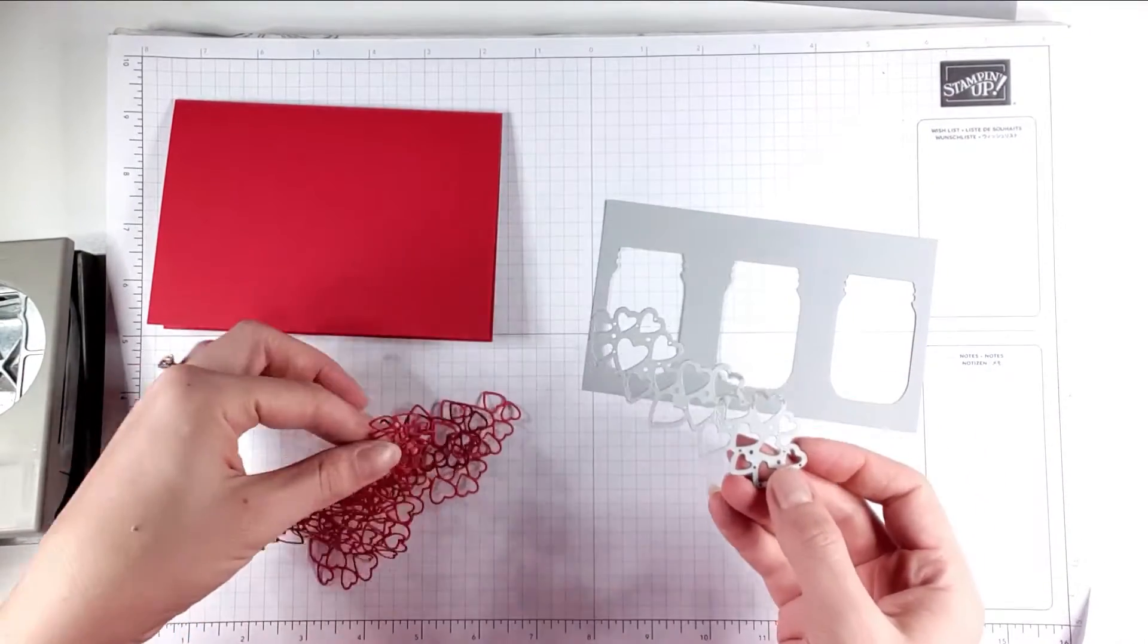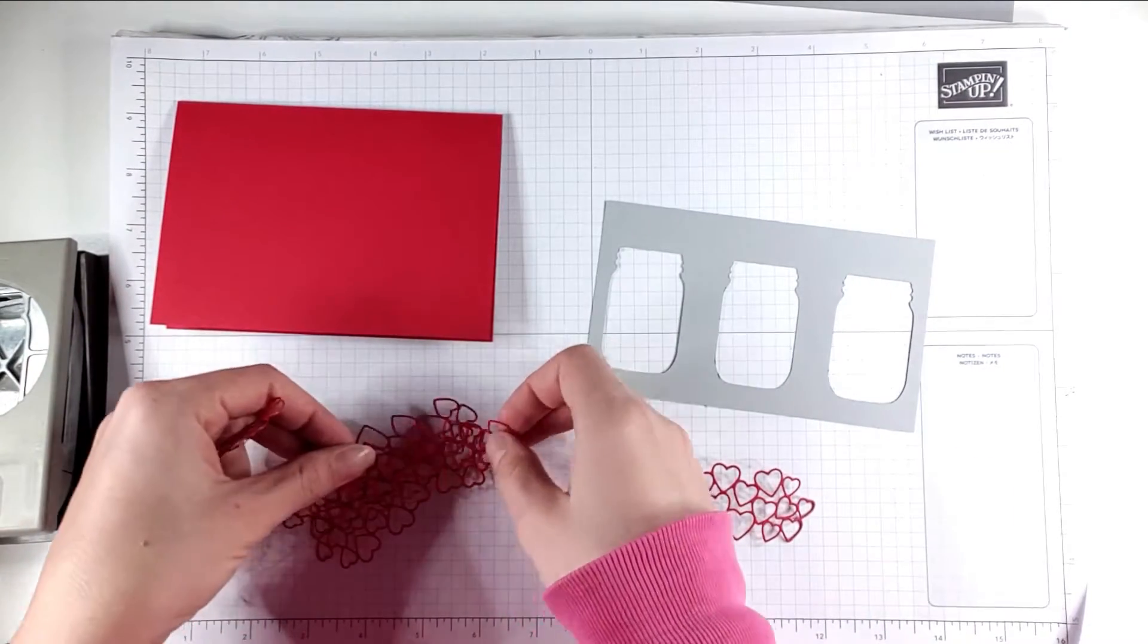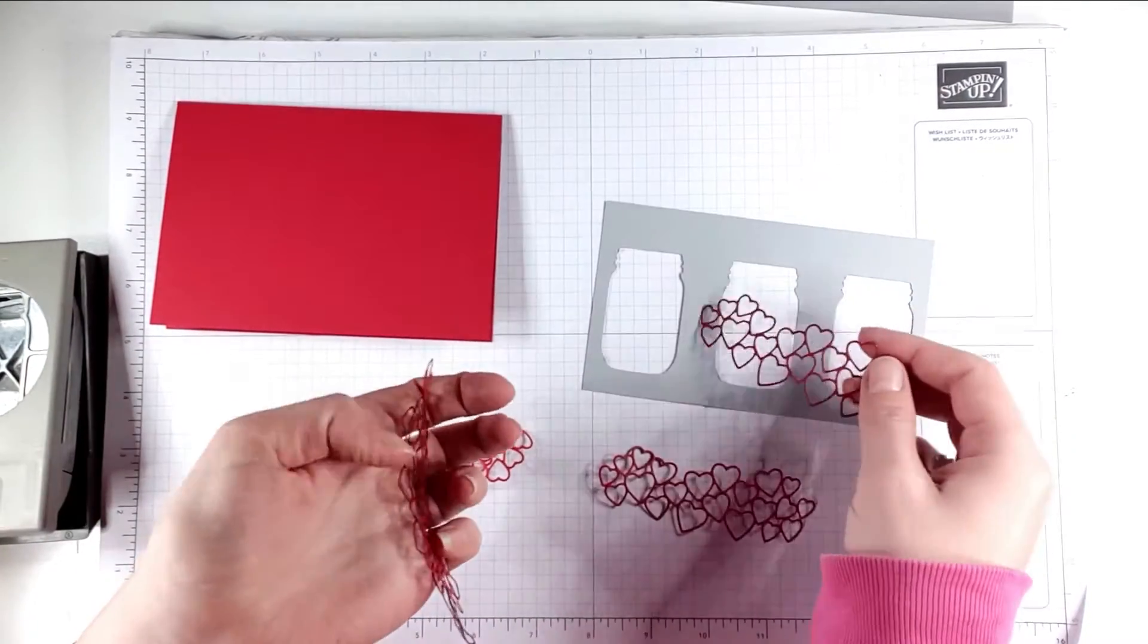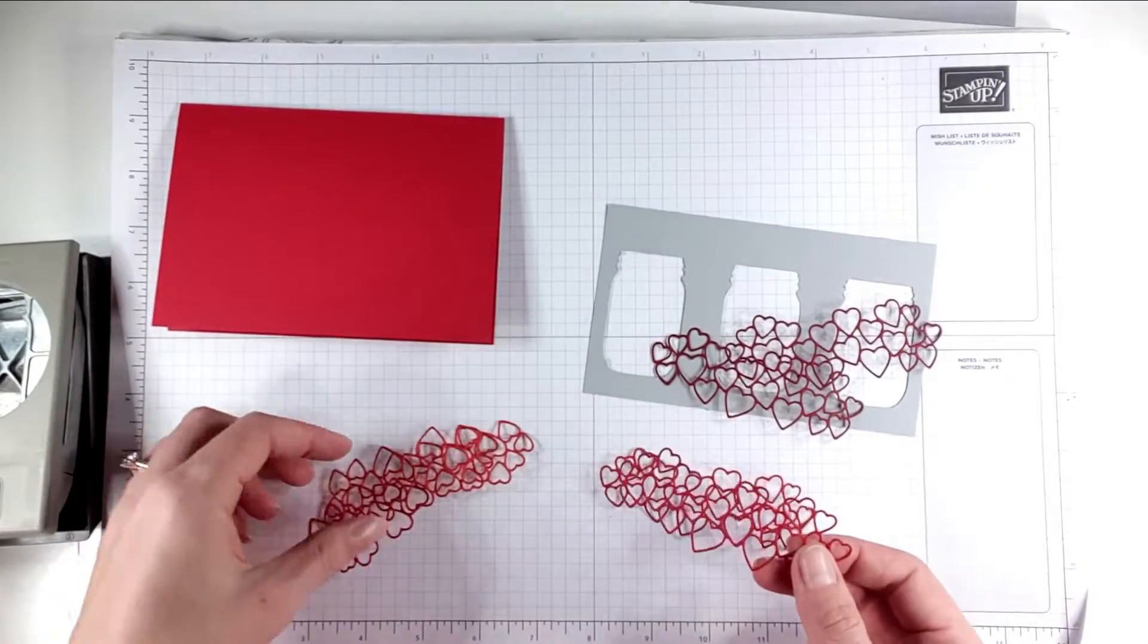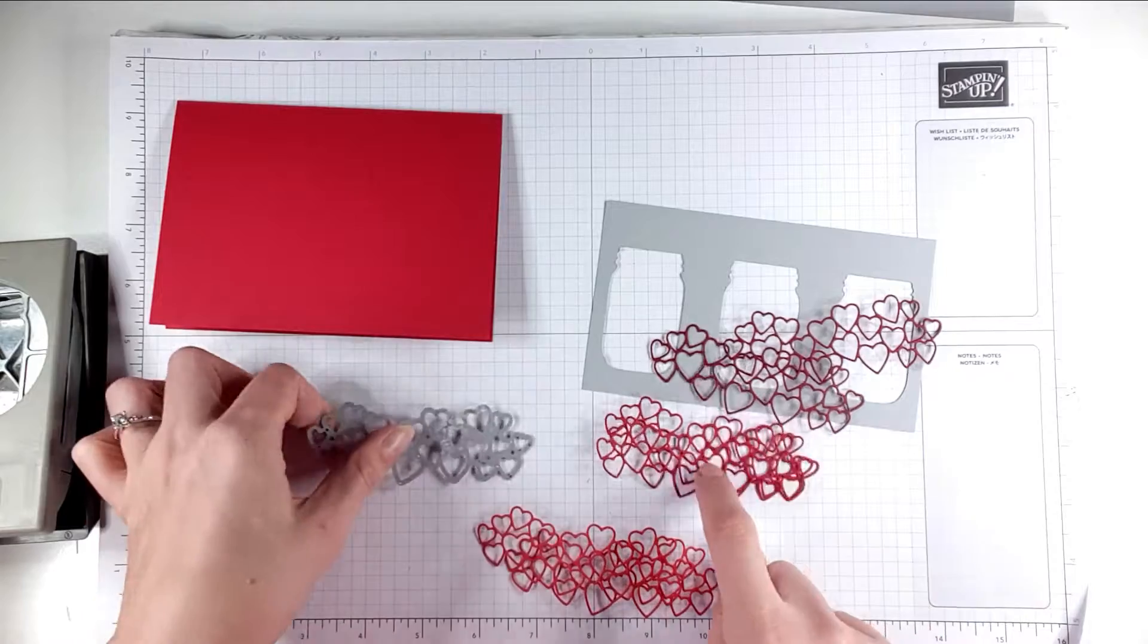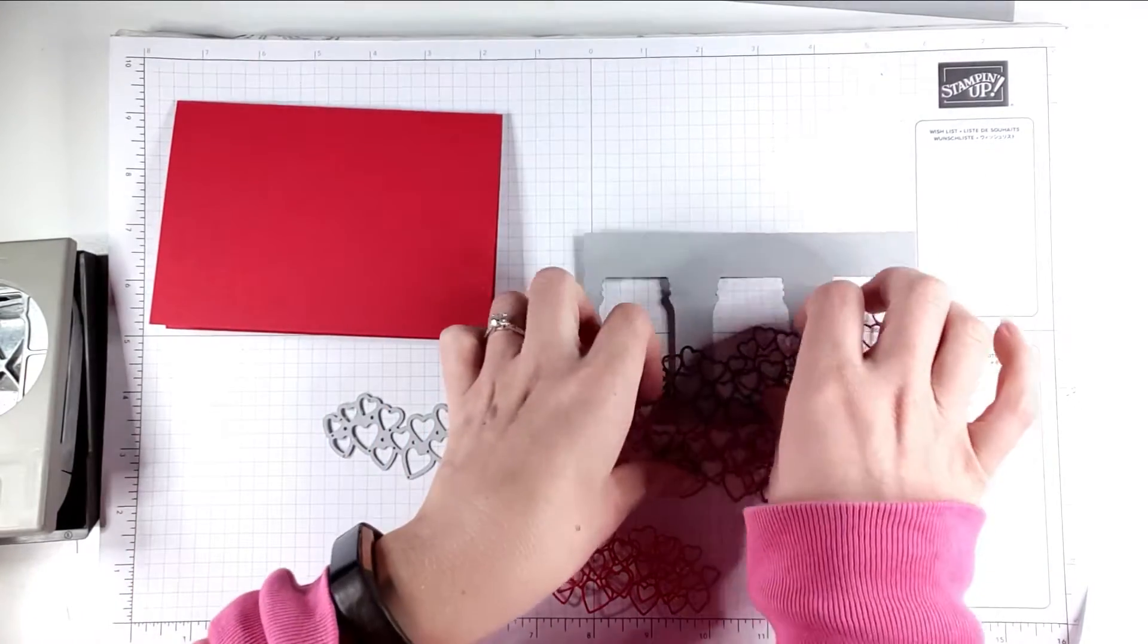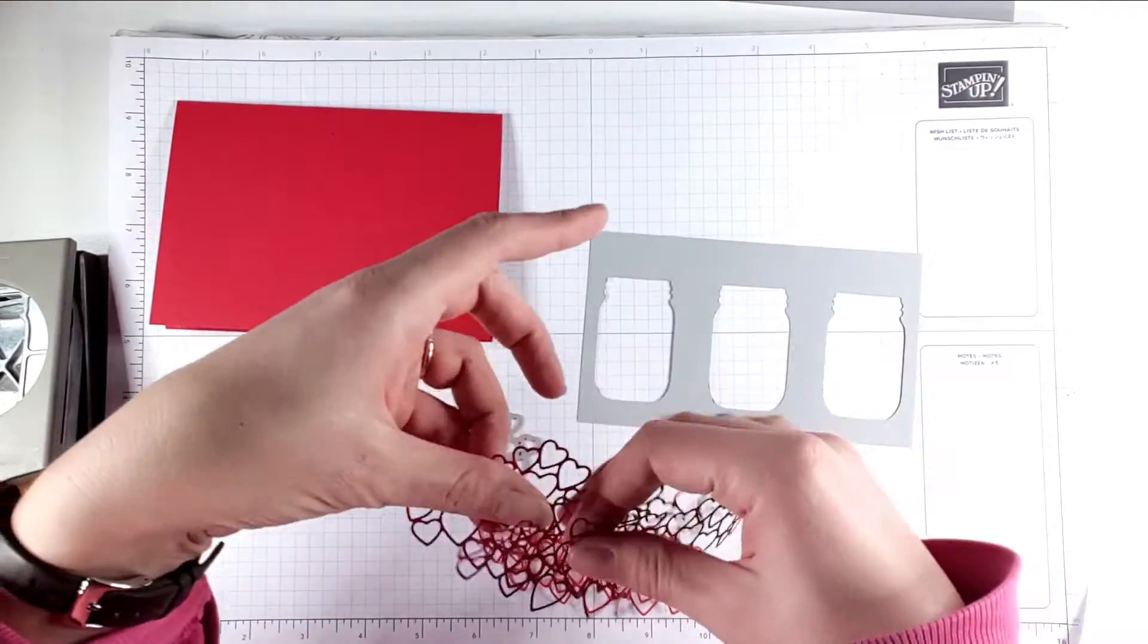So then I've used this die to cut out these. I've got two in Cherry Cobbler, two in Real Red and two in Poppy Parade. But I'm not actually going to use these today. I can use those for different projects. I'm actually going to use the hearts that come from inside all the holes.